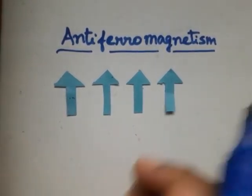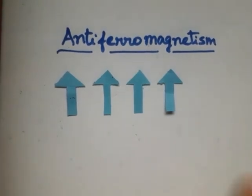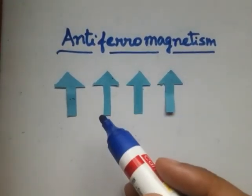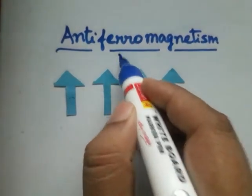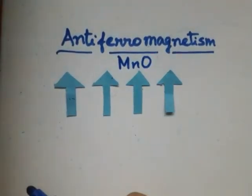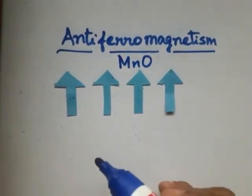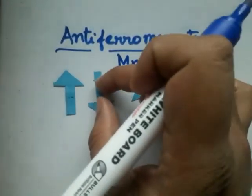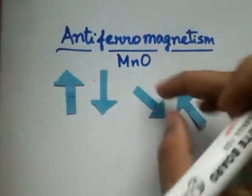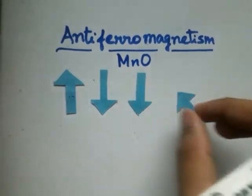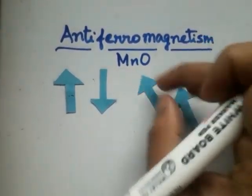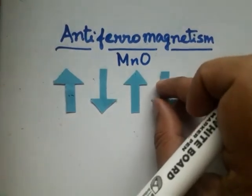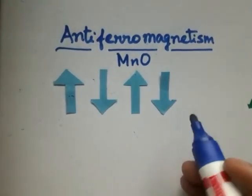In the case of antiferromagnetism, at very low temperatures, certain crystals — like some metal oxides such as chromium oxide, manganese oxide, or nickel oxide — exhibit this property. In these substances, the domain spins are exactly oppositely oriented to each other; they cancel each other out exactly, so that the net spin is zero when there is no external magnetic field.